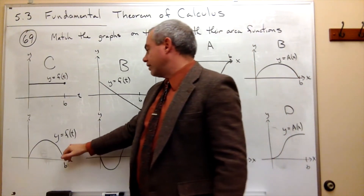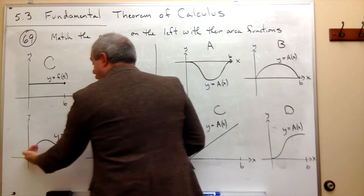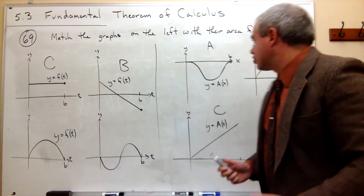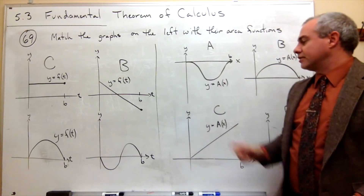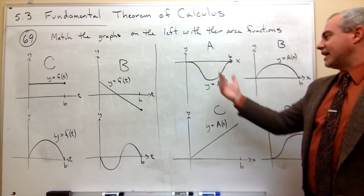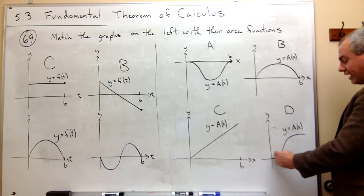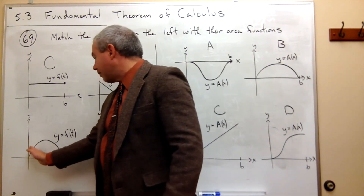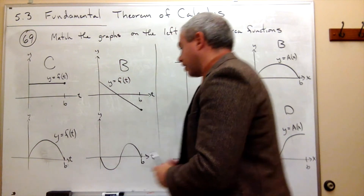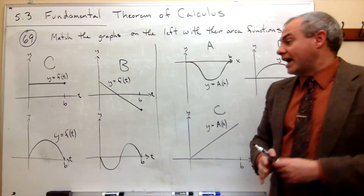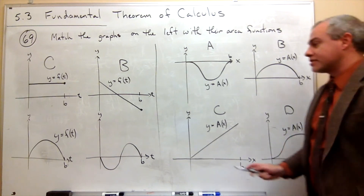Now let's look at the third one. This one, I get more and more area the further along I go, so this one should always be positive — it should never dip down as negative. What choices do I have? This one says it's always negative area, so it can't be that one. This one is always picking up positive area, and it's doing it in a non-linear way — at the beginning I pick up just a little bit of area, then it gets quite large towards the middle, then smaller and smaller, but always increasing. So the area function is getting bigger and bigger the whole way. So this is D.